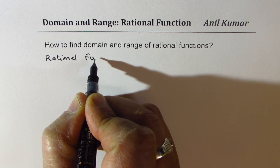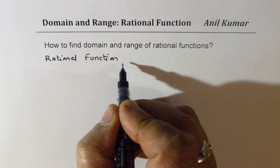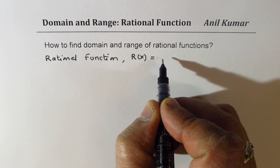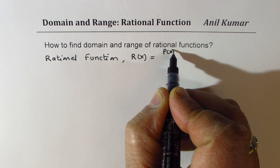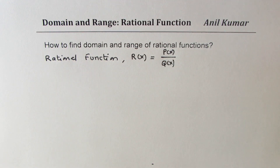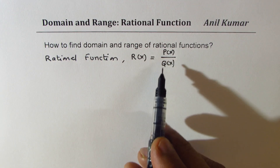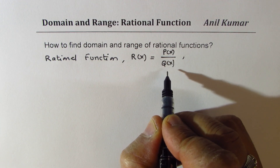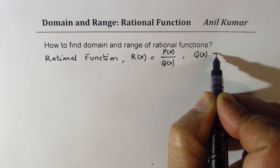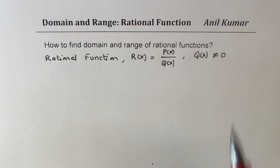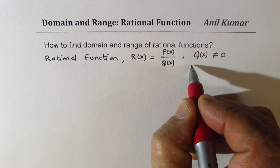When I say rational function, I mean something like a function notation which has a polynomial p(x) in the numerator and another polynomial q(x) in the denominator. That becomes a rational function, and since you cannot divide by 0, q(x) is not equal to 0. As soon as I say something is not equal to 0, it means we have restrictions.